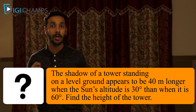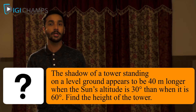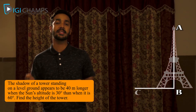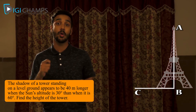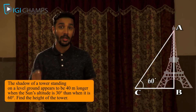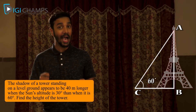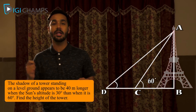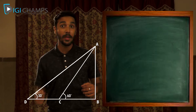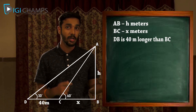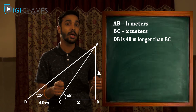Let us now look at some complex problems. The shadow of a tower standing on a level ground appears to be 40 meters longer when the sun's altitude is 30° than when it is 60°. Find the height of the tower. Suppose AB is the tower and BC is the length of the shadow when the sun's altitude is 60°. DB is the length of the shadow when the angle of elevation is 30°. Let AB = H meters and BC = X meters. DB = 40 + X meters.